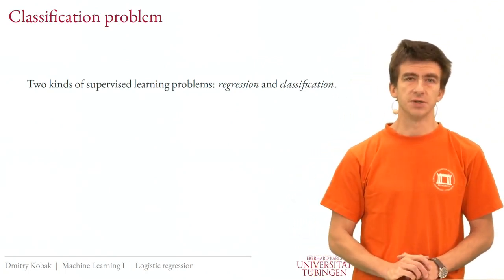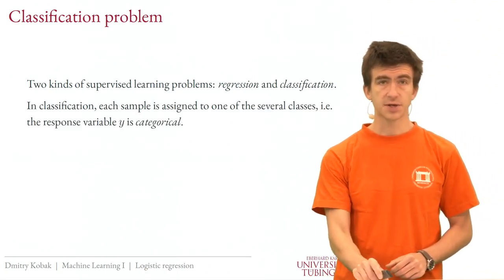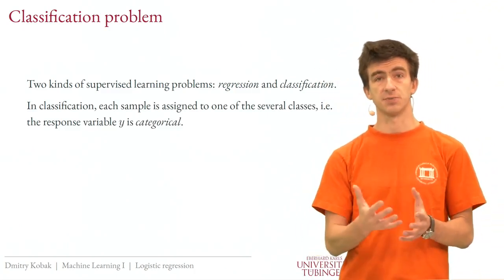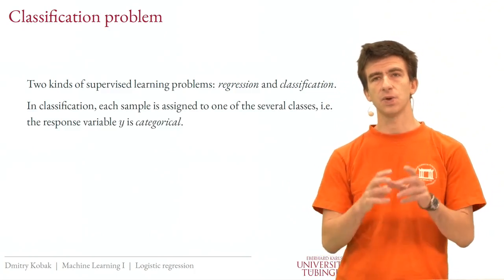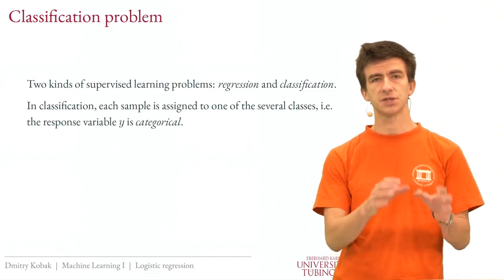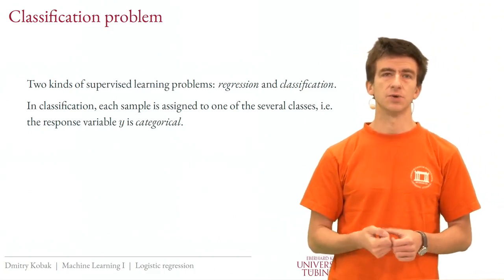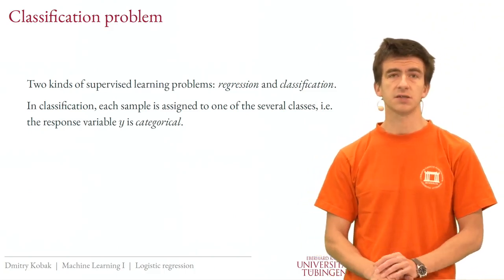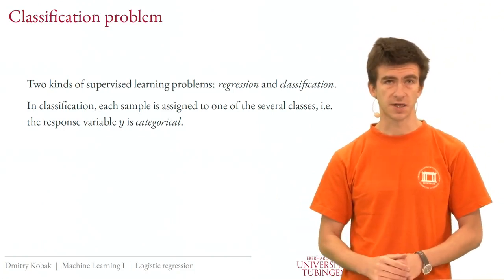What is the difference between regression and classification problems? In regression, we use some predictor variables to predict a response variable which is usually continuous. In classification, we want to classify our samples into discrete classes. For example, if you're given an image and you want the algorithm to tell if it's a cat or a dog, that's a classification problem. There can be more than two classes — cat, dog, crocodile, or panda — that's also a classification problem.